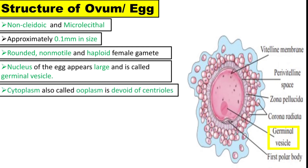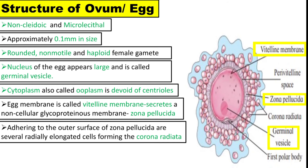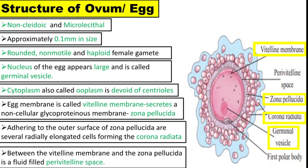The egg is surrounded by various coverings. The egg membrane is called the vitelline membrane. It secretes a non-cellular glycoproteinous membrane called zona pellucida on its outside. Adhering to the outer surface of the zona pellucida are several radially elongated cells forming the corona radiata. These cells are derived from the innermost layer of granulosa cells. They are firmly held to the zona pellucida and to each other by hyaluronic acid. Between the vitelline membrane and the zona pellucida is a fluid-filled perivitelline space. The first polar body lies in this space.